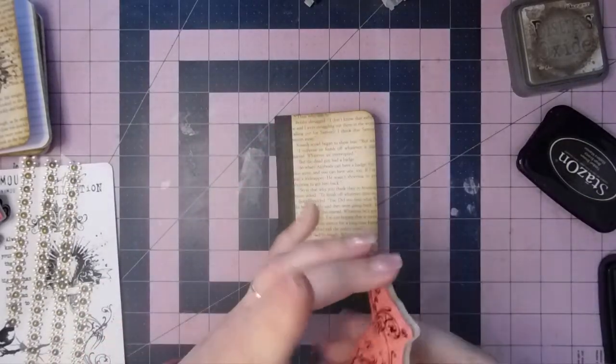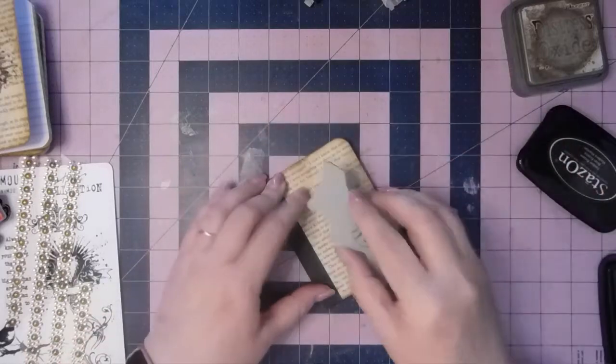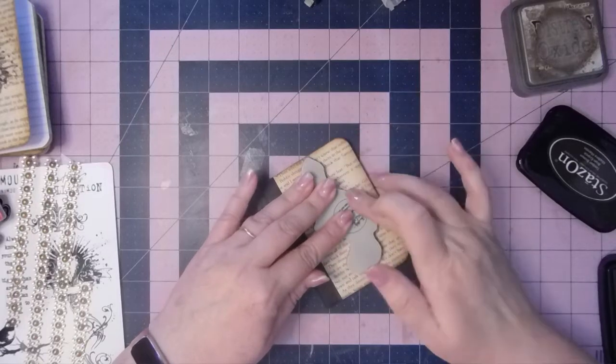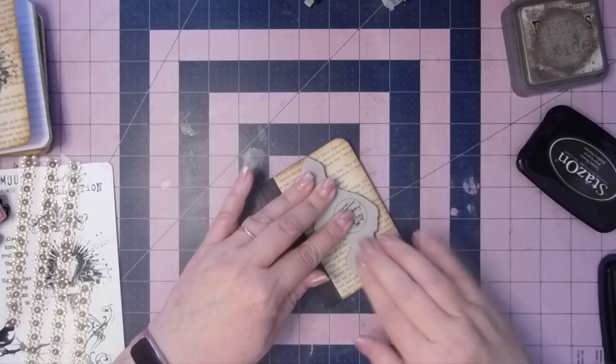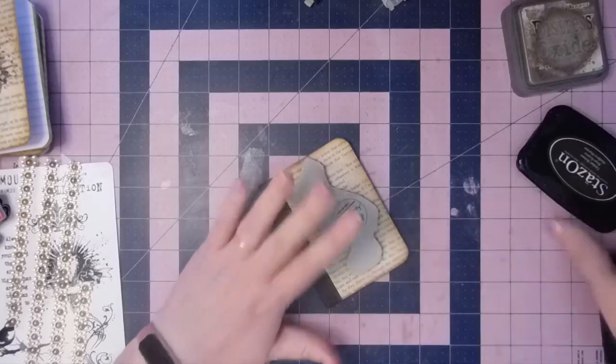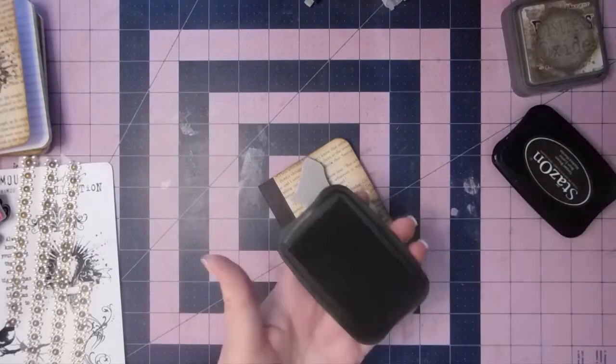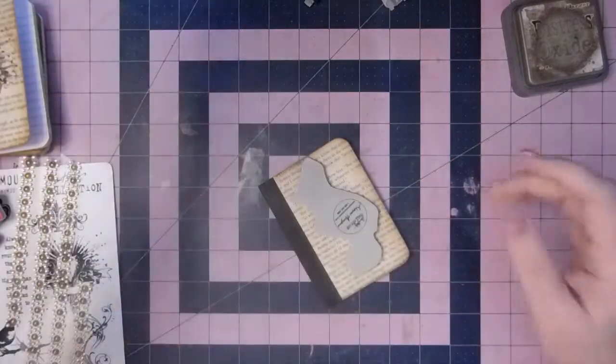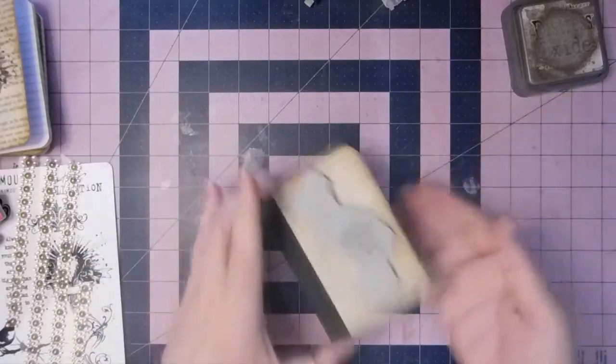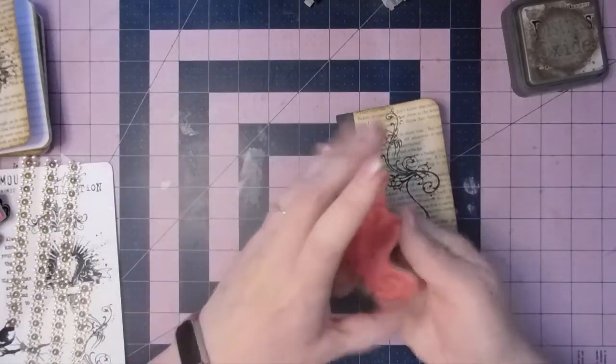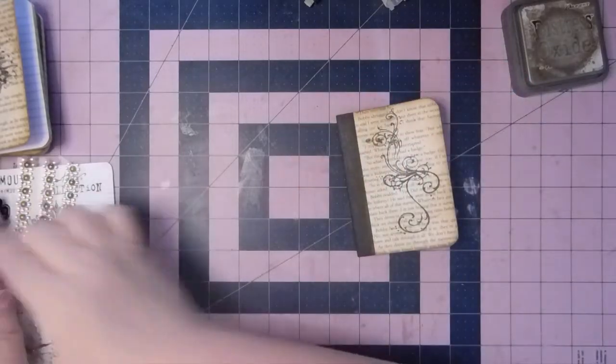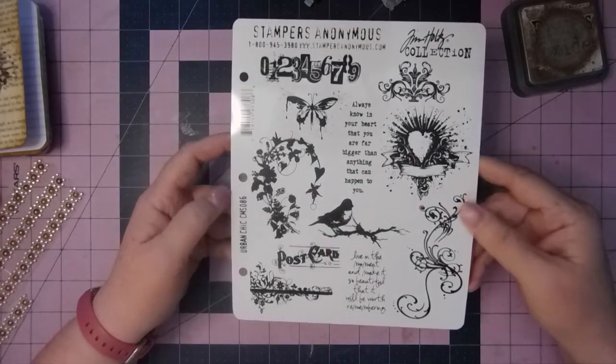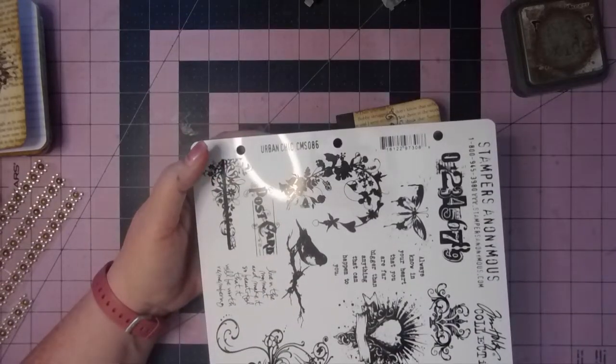So I'm just going to flip that over. I do give it a second just for that ink to kind of get in there. And I don't know what I did with my little, ah, there it is. Little plastic thing for that. And rather than trying to pick it up and smudge it, I just dump it off. This is the collection here. Stamper's Anonymous, Tim Holtz Collection, Urban Chic, CMS 086.